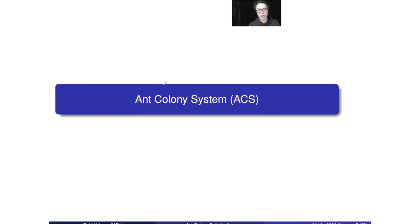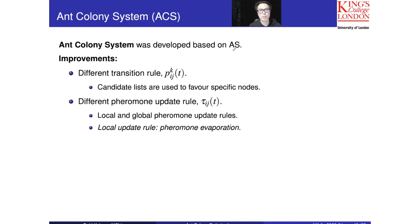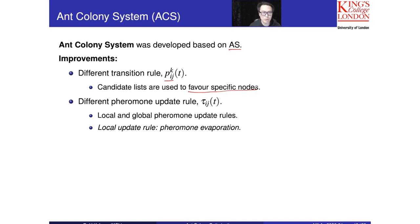Now I'm going to talk about another variation. We call this the Ant Colony System, or ACS. ACS was developed based on the S Ant System we learned from the previous section. The improvements include: first, the transition probability calculation is different. We are going to set up the favorable node, meaning the favorable node will have a high chance to be chosen as the next node to be visited. We also have different pheromone update rules for tau-ij: local and global pheromone update rules.